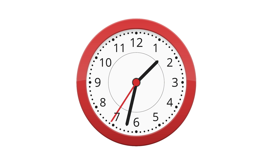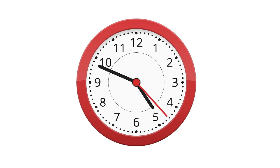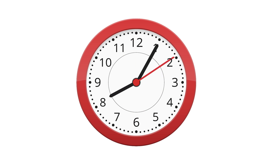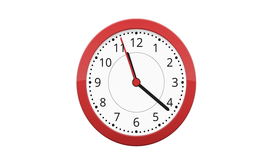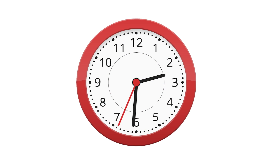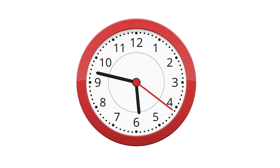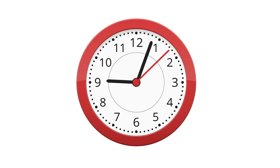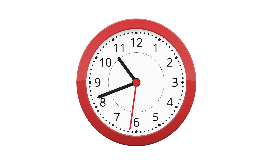As we have seen earlier, the clock runs from 12 to 12 twice a day. In order to differentiate between two similar times, we have an interesting concept. A day has different parts.